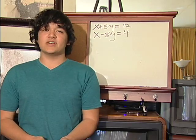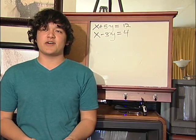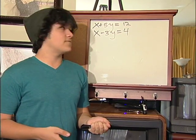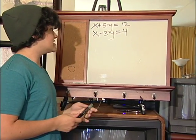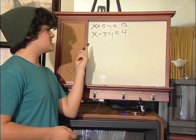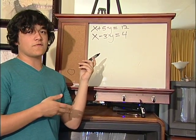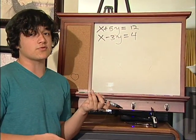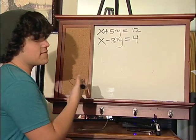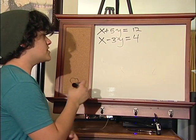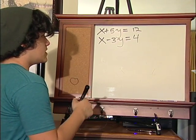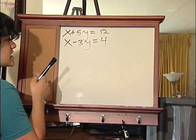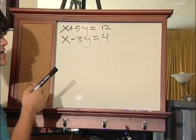Much like the addition method, the subtraction method operates under many of the same principles. One of the only differences is the change in sign. Both coefficients have to be of the same sign as well as equal value. Here, x is the similar coefficient. We have x plus 5y equals 12, and x minus 3y equals 4.